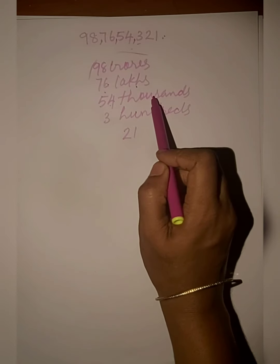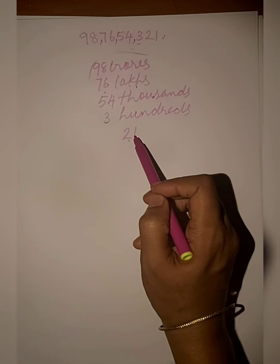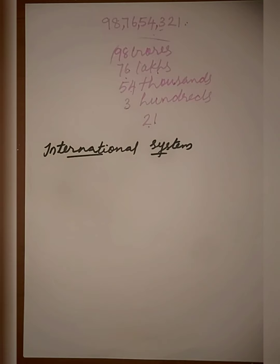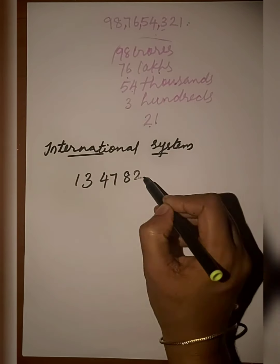Next we discuss the International system. The International system is organized into periods: the ones period includes ones, tens, and hundreds; the thousands period includes thousands, ten thousands, and hundred thousands; the millions period includes millions, ten millions, and hundred millions.